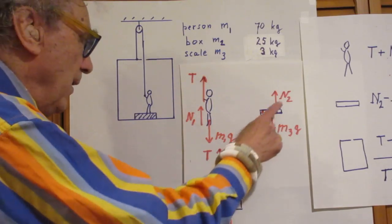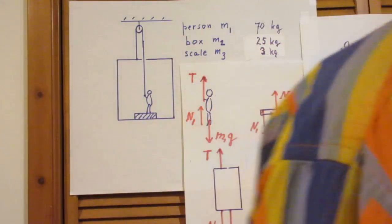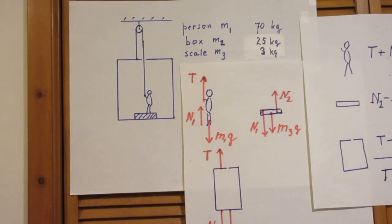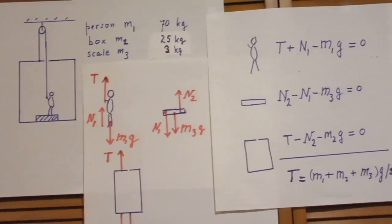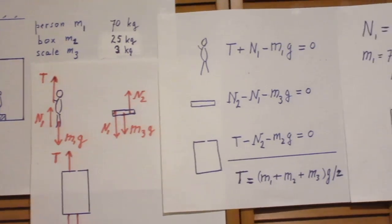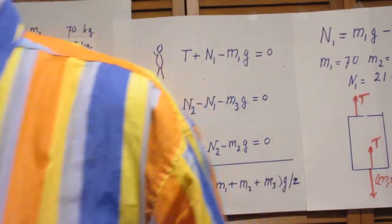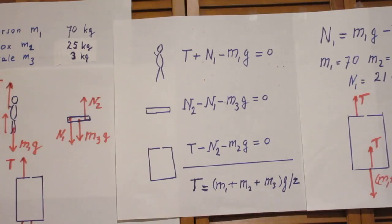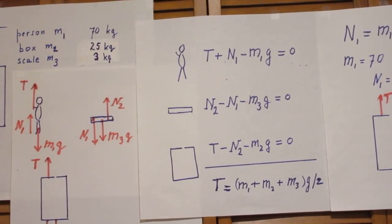And this will give you three equations with three unknowns. You will see shortly how that works. T, N1, and N2. And you can solve for all three.